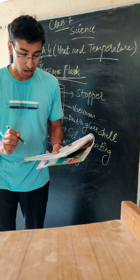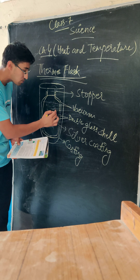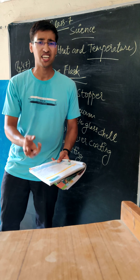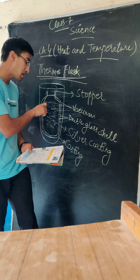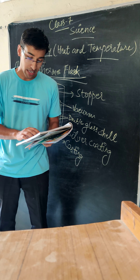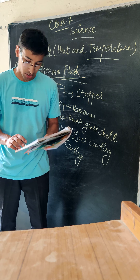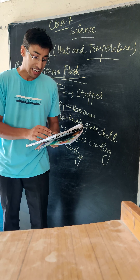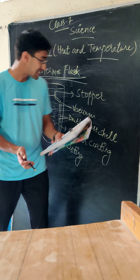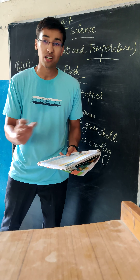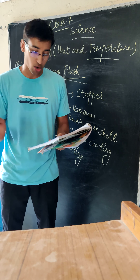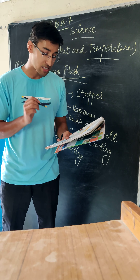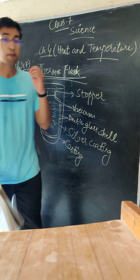The vacuum present between the walls prevents the loss of heat by convection. The outer shining silver surface is a poor radiator of heat, so it prevents the loss of heat by radiation. The glass itself is also a bad radiator of heat.